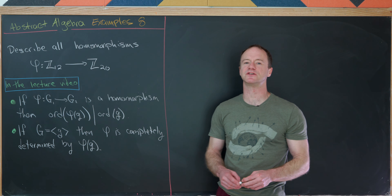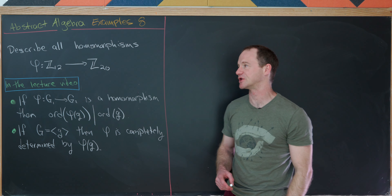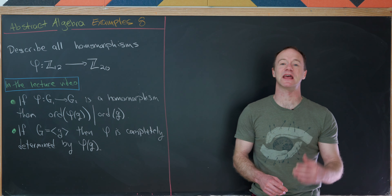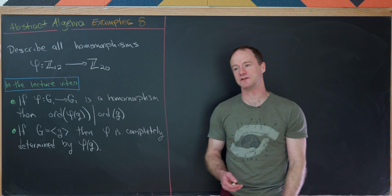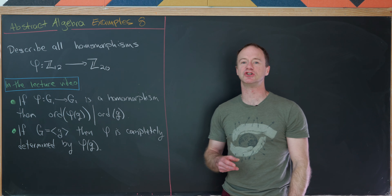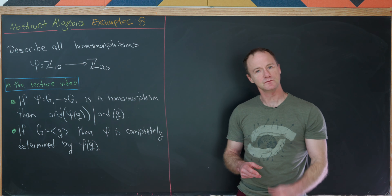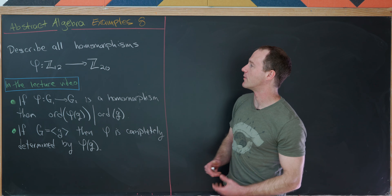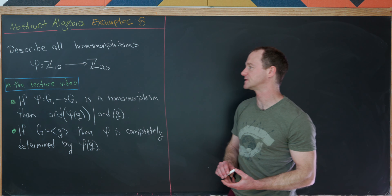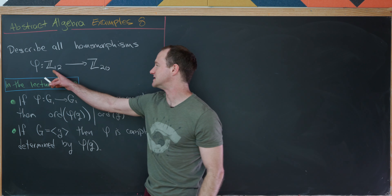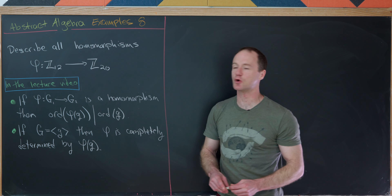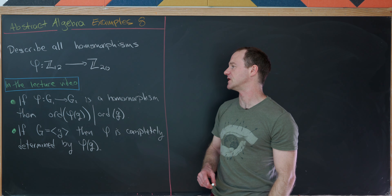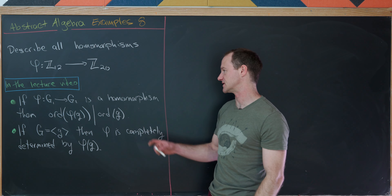This is the eighth example video in our series on abstract algebra. The main lecture video was about homomorphisms and isomorphisms, and really an introduction to those two topics. For our first example, we'll describe all possible homomorphisms between Z12 and Z20, and the important points from the lecture video for this problem go like this.